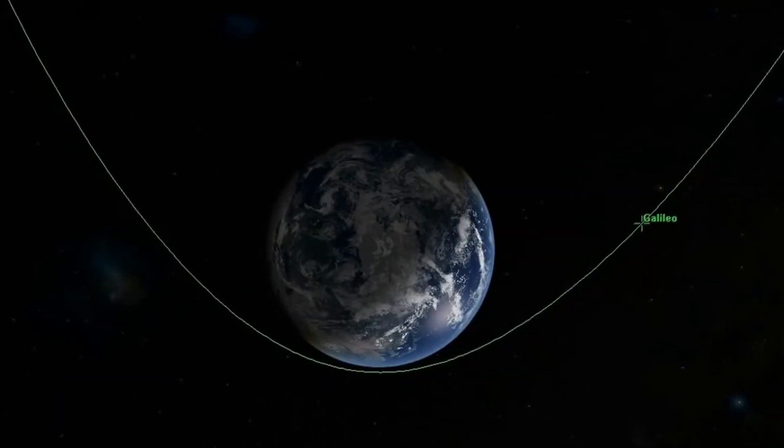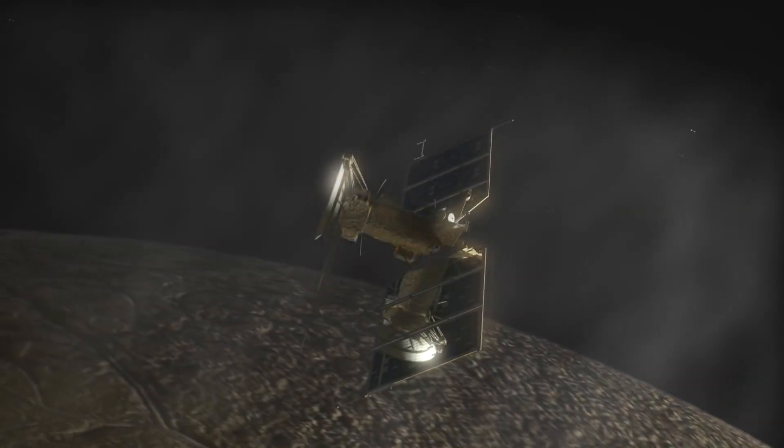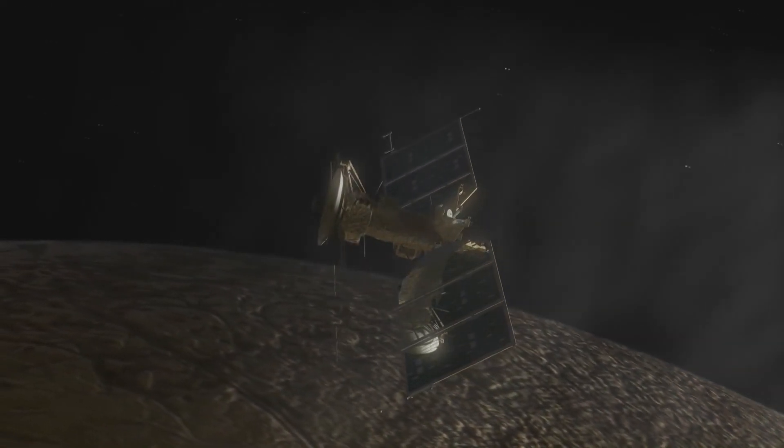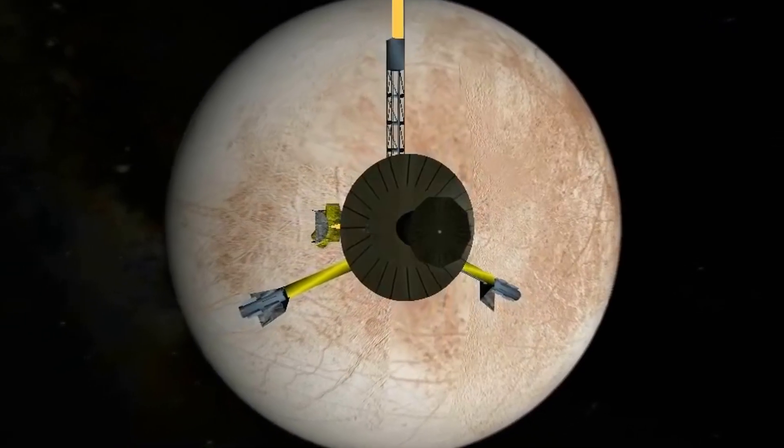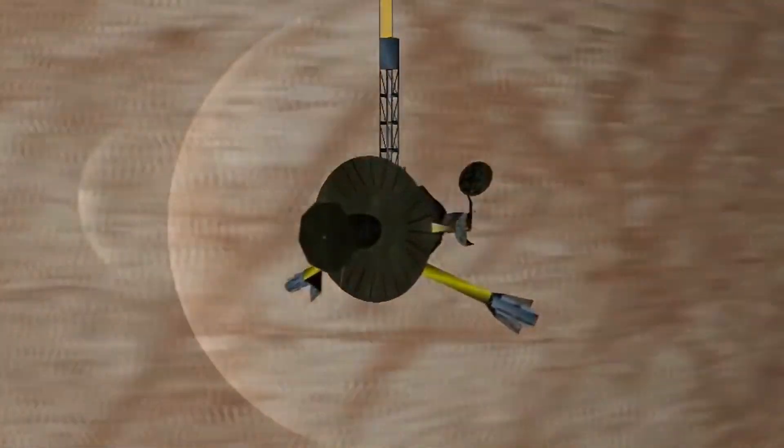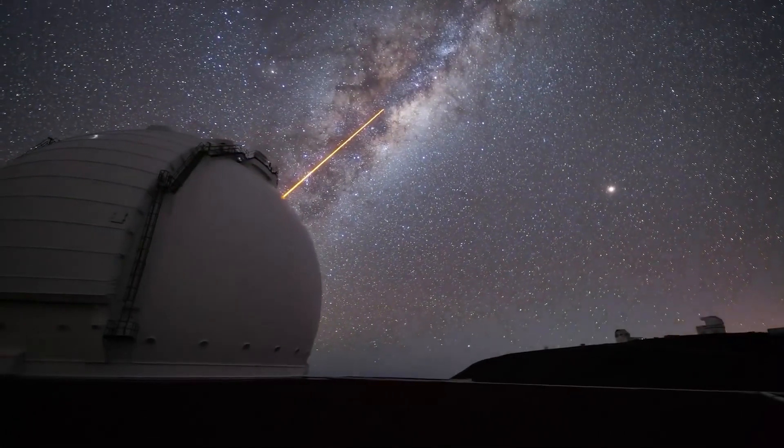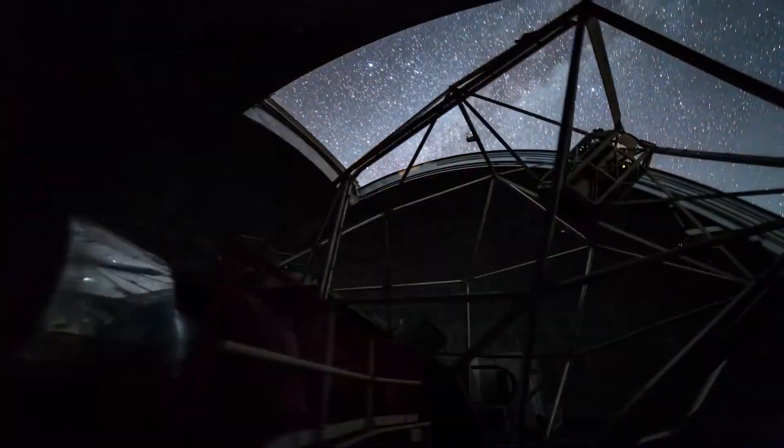This became known in the early 2000s thanks to the Galileo Probe, which detected marks of an electrically conductive liquid under the surface of Europa. It also discovered that the surface is made of ice and that it's one of the smoothest in the solar system.